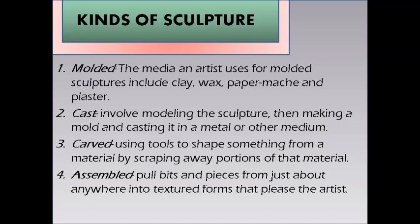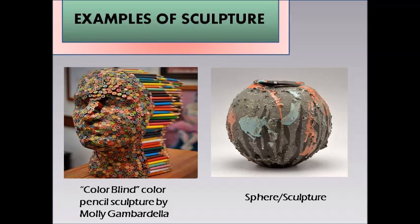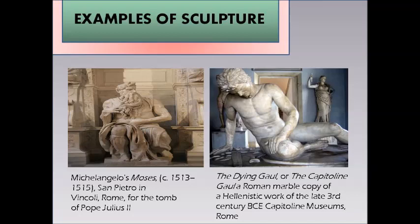Examples of sculpture include the colorblind color pencil sculpture by Molly Gambardella and a spear sculpture. Also notable are Michelangelo's Moses, circa 1513–1515, in San Pietro in Vincoli, Rome, and the Dying Gaul — a Roman marble copy of a Hellenistic work of the late 3rd century BCE — at the Capitoline Museums, Rome.